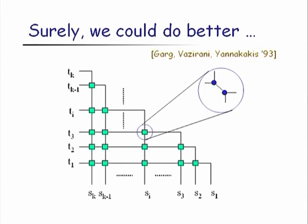One might hope to do better by being more sophisticated. However, Garg, Vazirani, and Yannakakis identified — nearly 20 years ago — a simple graph instance showing that this LP has an integrality gap of √M. This instance is a grid-like graph where sources are on the x-axis, sinks on the y-axis, and green blob gadgets force paths to traverse a common edge to cross through.